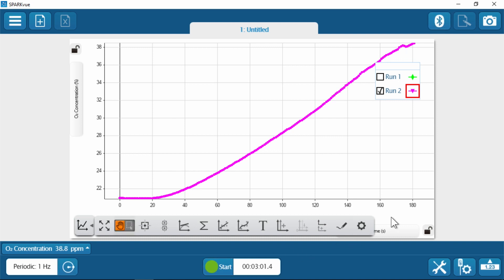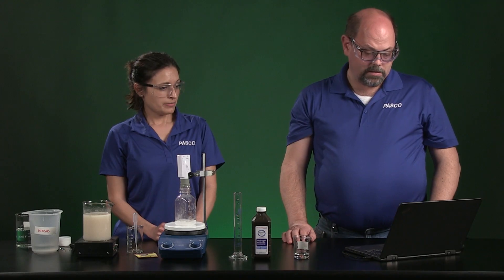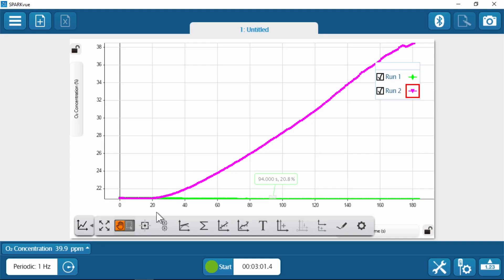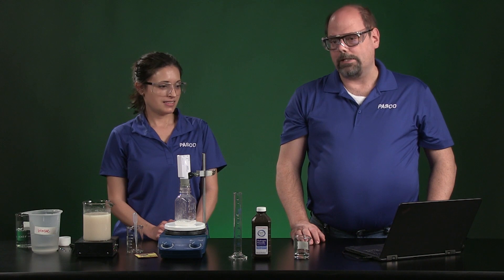If you want to be able to compare these two directly, you can turn both runs on by just putting a check mark into that same system. And at this scale, you can see quite a drastic difference between these two reactions. Again, you're going to then take two points and use the coordinate tool to find out a low value and a high value from which you can determine your rate.